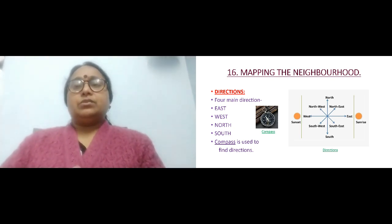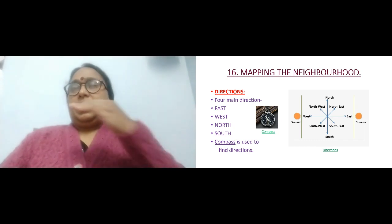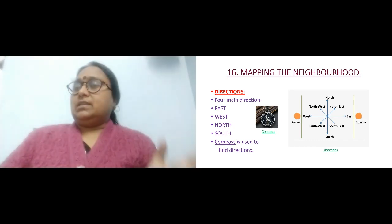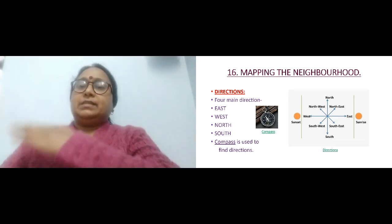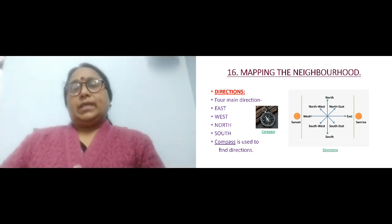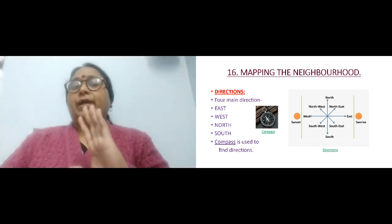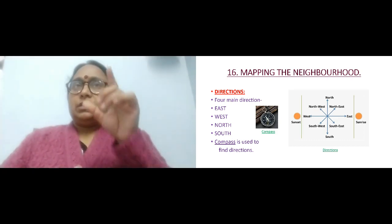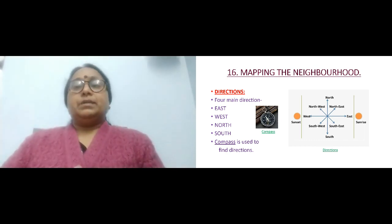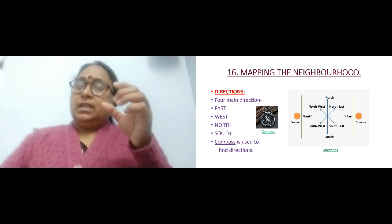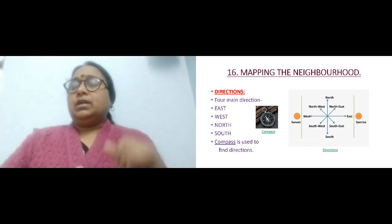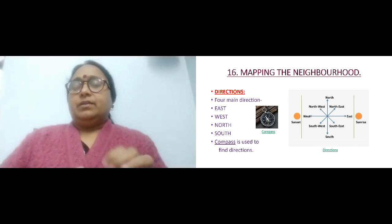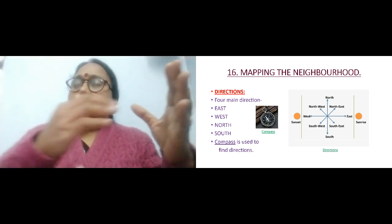The sun rises from the east and sets in the west — hope you all know that. When you use a compass, it has a needle, as you can see in the picture of a compass here. That needle always points to the north, and accordingly you find the other three directions.